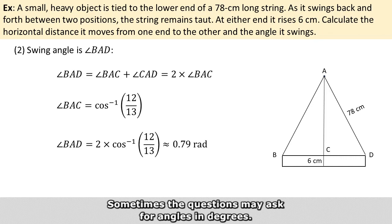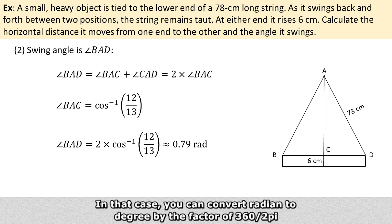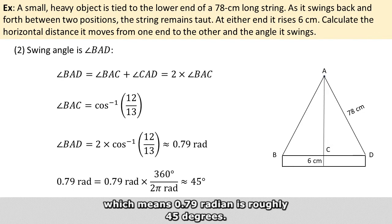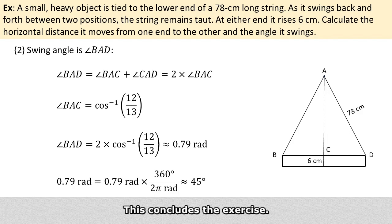Sometimes the question may ask for angles in degrees. In that case, you can convert radian to degree by the factor of 360 over 2 pi, which means 0.79 radian is roughly 45 degrees. This concludes the exercise.